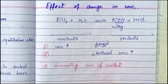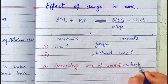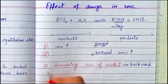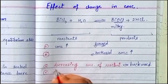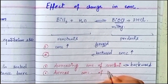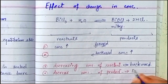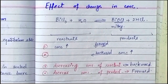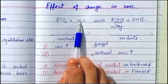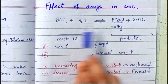When we decrease the concentration of reactants, the reaction shifts in the backward direction to produce more reactants. If we decrease the concentration of products, then the reaction proceeds in the forward direction to produce more products.